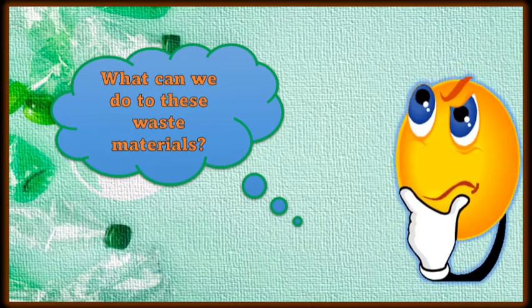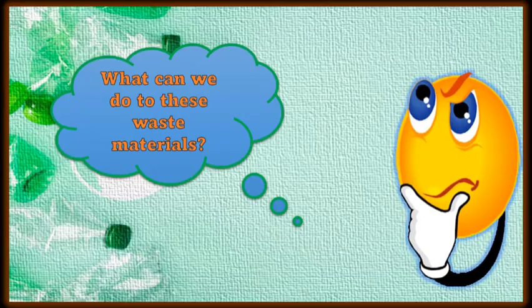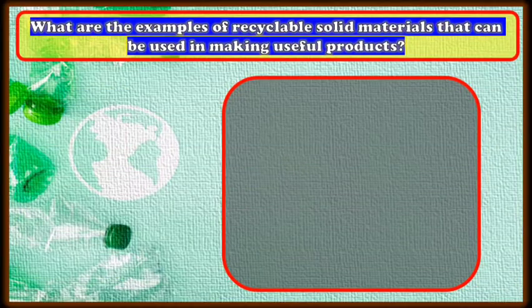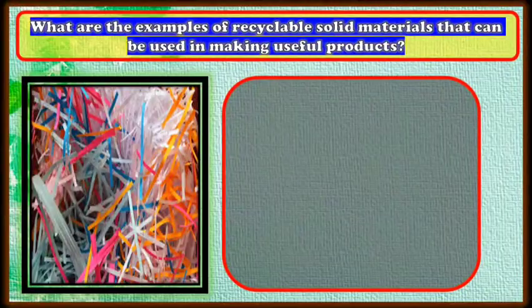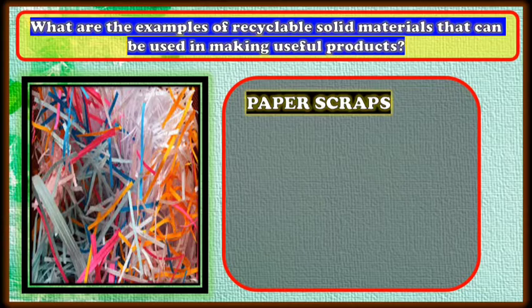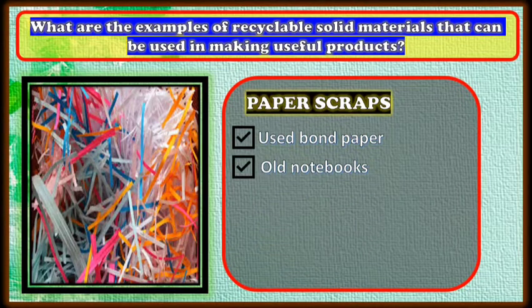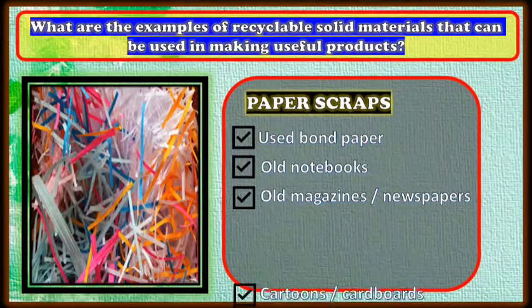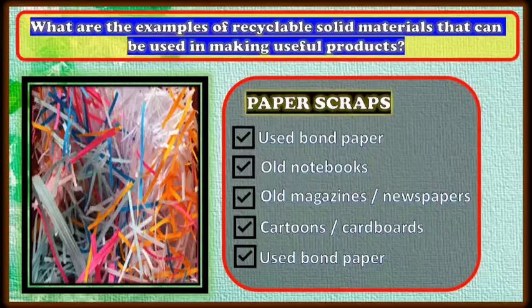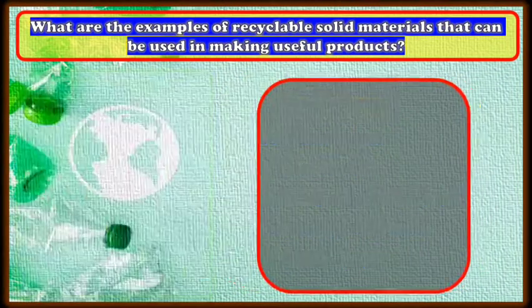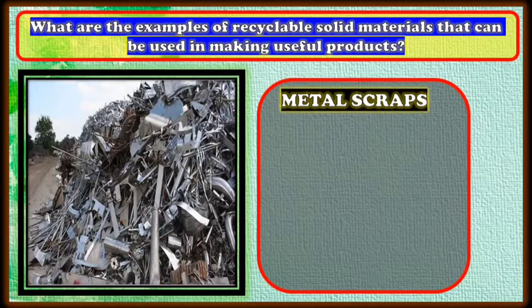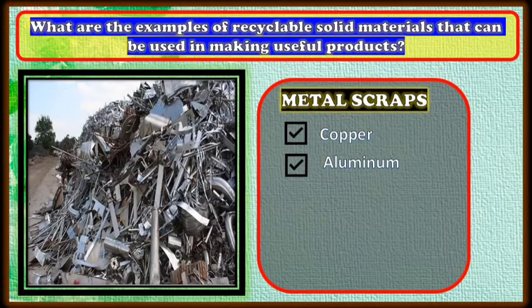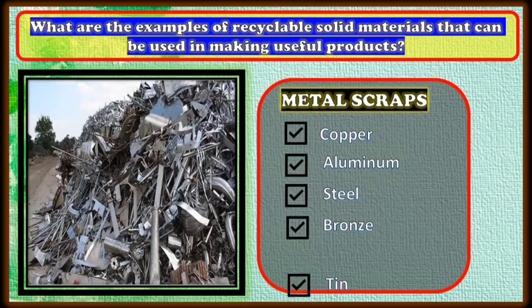My question now is, what can we do with these waste materials? We can recycle. So what are examples of recyclable solid materials that can be used in making useful products? We have paper scraps, which include used bond paper, old notebooks, old magazines or newspapers, cartoons or cardboards. Another example is metal scraps, which include copper, aluminum, steel, bronze, or tin.